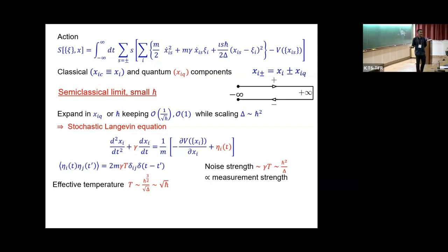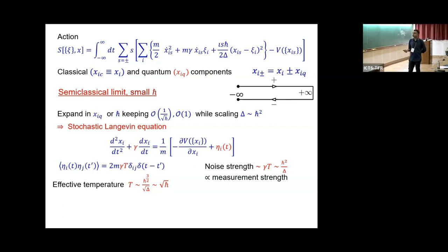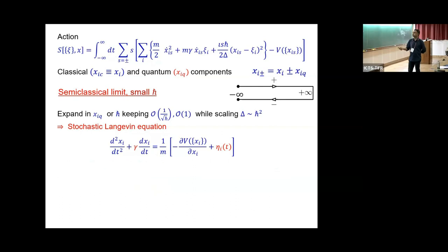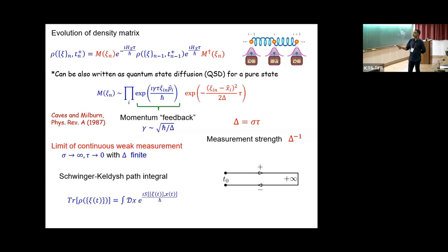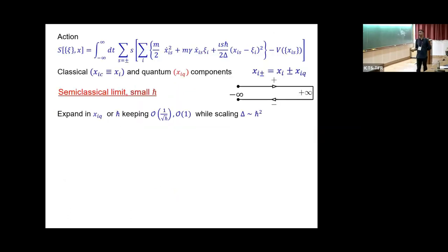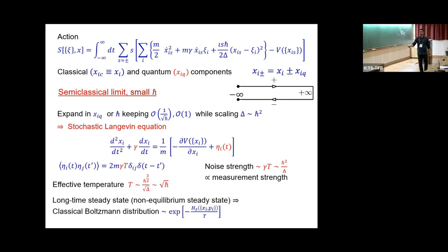The main point is that the noise strength is entirely determined by the quantum fluctuation parameter h-bar and your measurement strength. It looks like a standard Langevin equation with some effective temperature, but the noise is entirely controlled by quantum fluctuations and measurements. The gamma here is the strength of the feedback. Without feedback, it won't settle into a nice steady state. With gamma satisfying a fluctuation-dissipation theorem, the system eventually leads to a classical Boltzmann distribution as the non-equilibrium steady state, with temperature determined by the measurement strength.